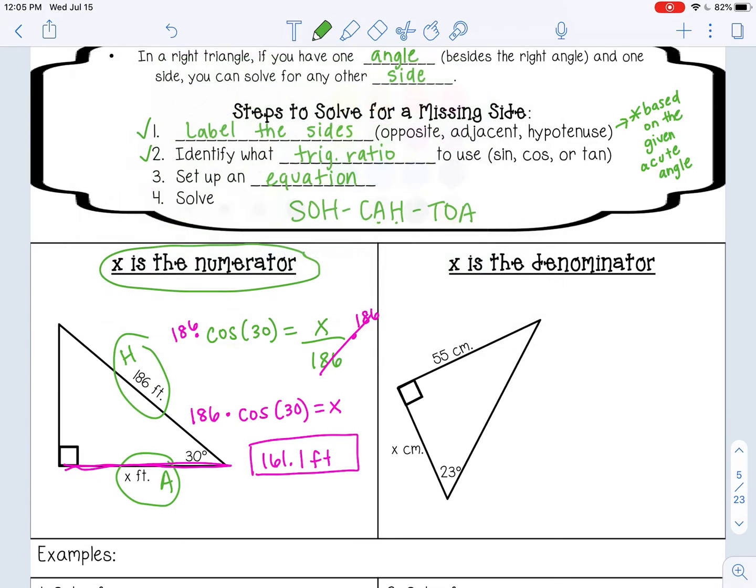Let's try when x is in the denominator. I'm going to follow the same steps. I'm going to label my sides. This is my hypotenuse - it's across from my right angle. Then I'm going to use the acute angle to label my other two. So this is opposite. This one has to be adjacent.